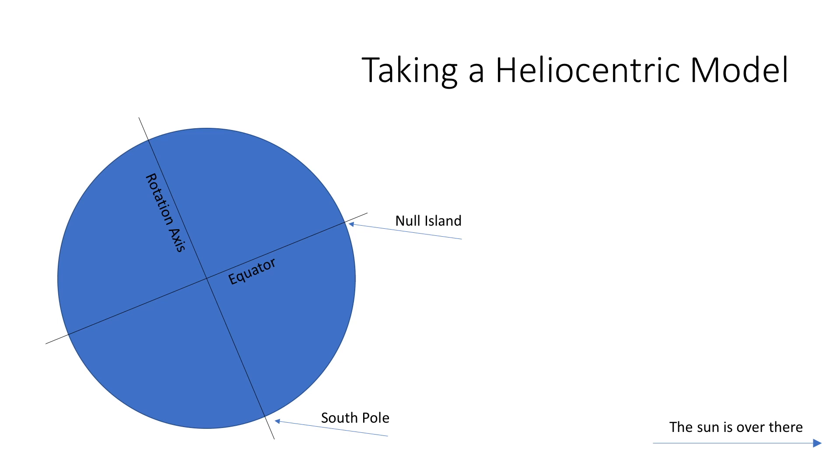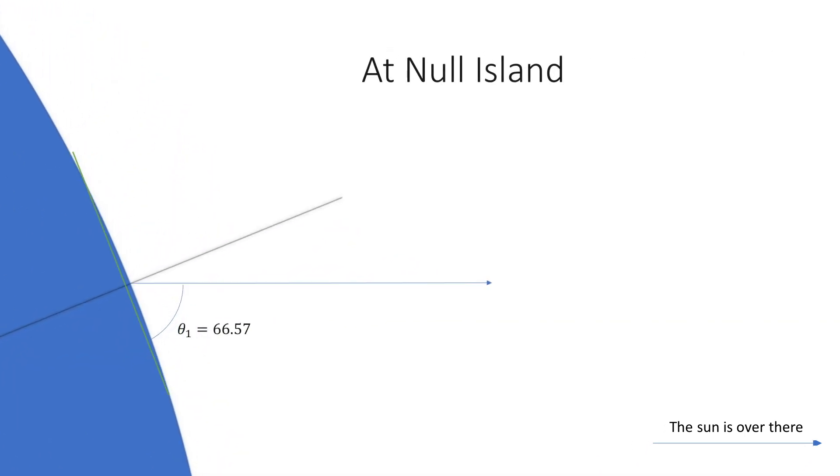So let's have a look at a different model or the heliocentric model. Here we have a cross section of the earth. Okay, and this is tilted by some angle and I've drawn in the equator and the rotation axis. And I've indicated Null Island and the south pole in there. Now the sun is far away off the right of the screen.